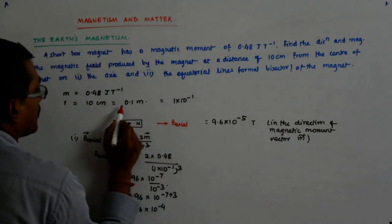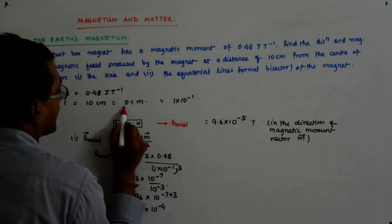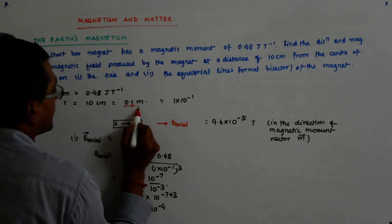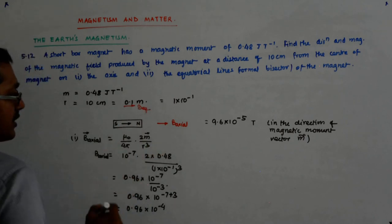Now on the perpendicular bisector at the same distance. So maybe it is something like this. This is your B equatorial.